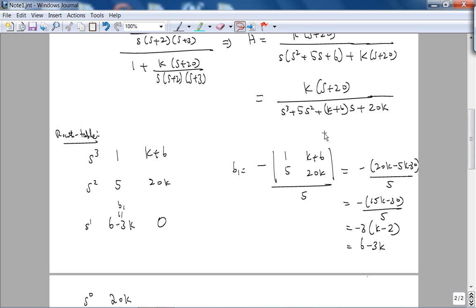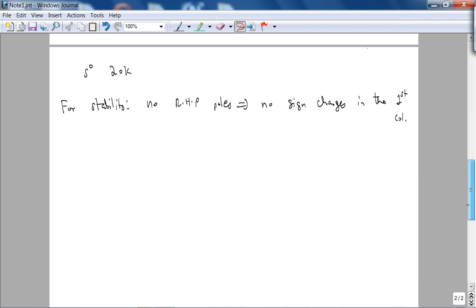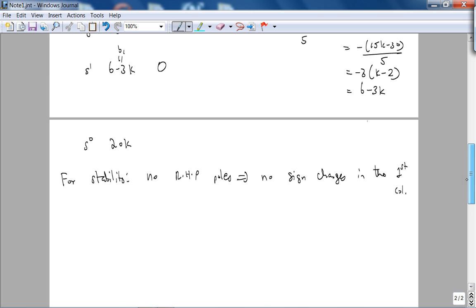But there's no way you can solve this, it's very difficult to solve this using a calculator for guessing and checking the range of k. In this case though, this implies that you want 6 minus 3k to be positive, and you want 20k to be positive. So this implies k has to be less than 2, this implies k has to be greater than 0. Therefore, the range of k is k between 0 and 2.